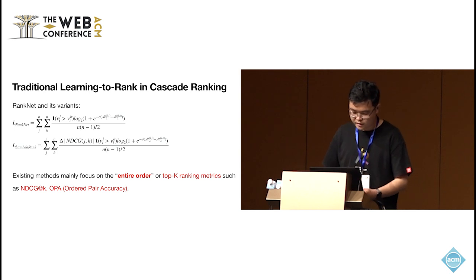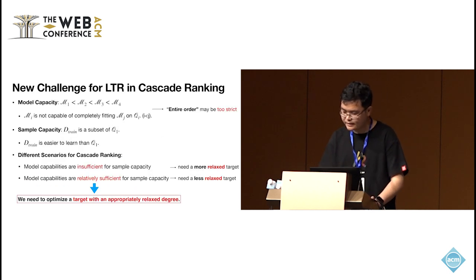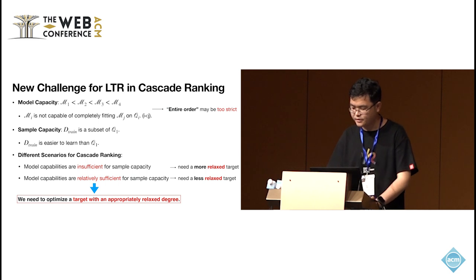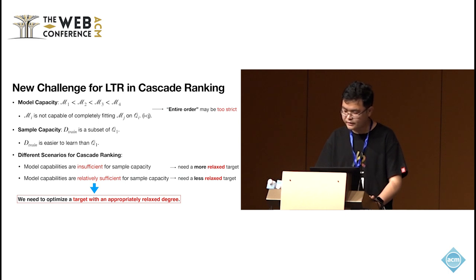Traditional learning to rank methods, such as RankNet and Lambda framework, often focus on the entire model pair or top pair order, which correspond to the ordered pair accuracy and the NDCG metric. A fact in Cascade ranking is that model capacity typically increases from the front to the end stages. Thus, it may be impossible for a stage to completely fit its post stage. So, in many cases, the model capacity is quite insufficient for sample capacity. We need to relax the learning target to make sure the optimization towards what we really want.